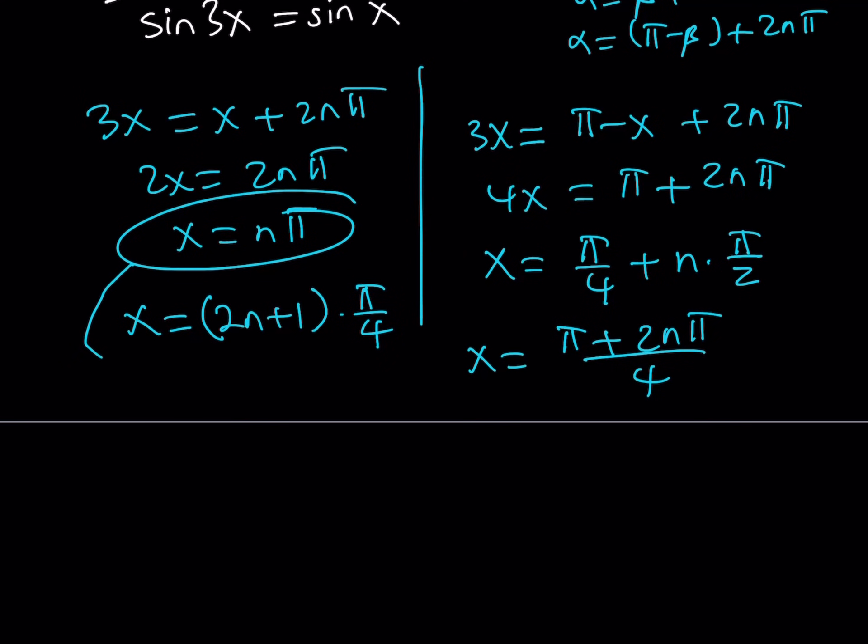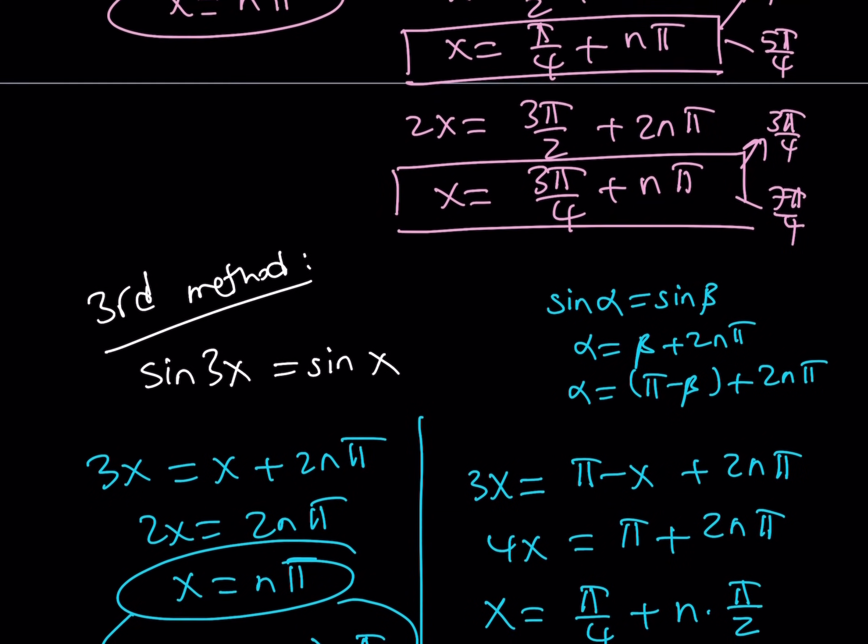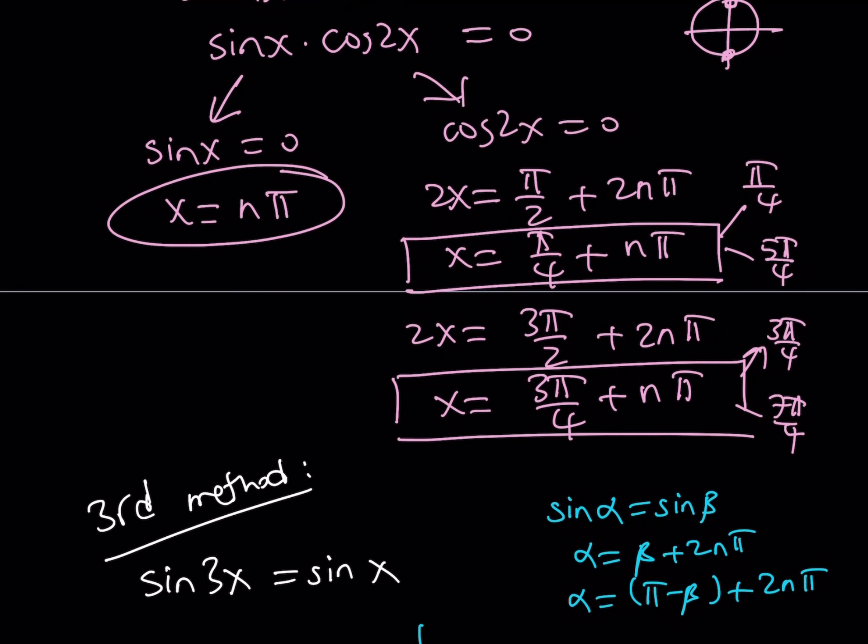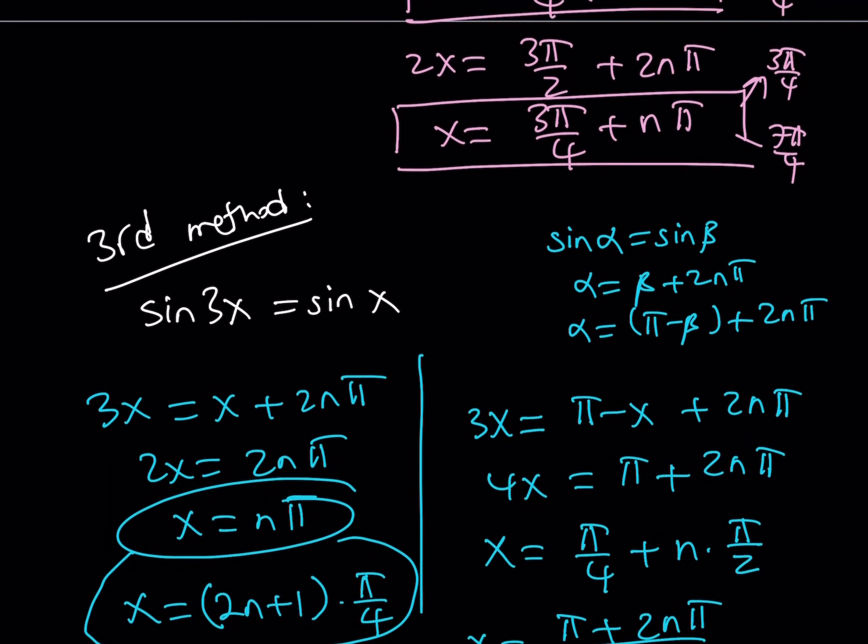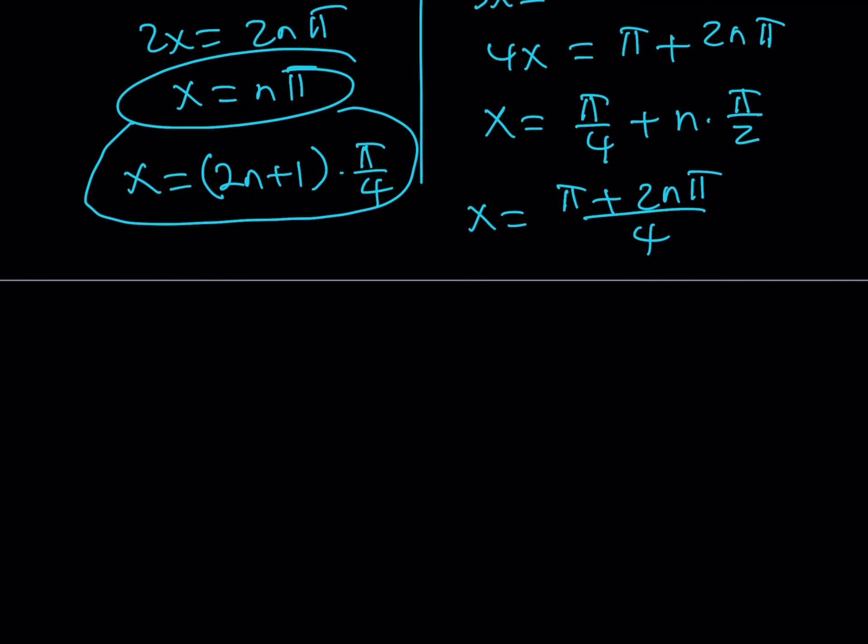Which indicates the odd multiples of pi over 4 are also going to be solutions. As before, remember, we talked about pi over 4, 3 pi over 4, 5 pi over 4, and 7 pi over 4.